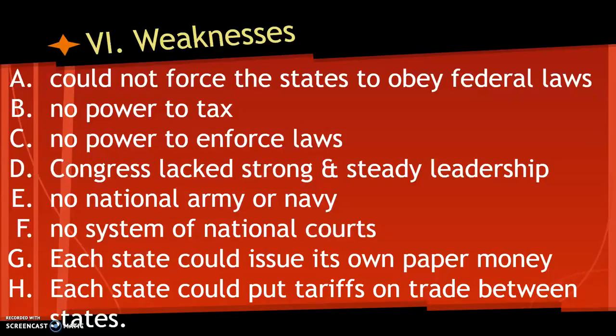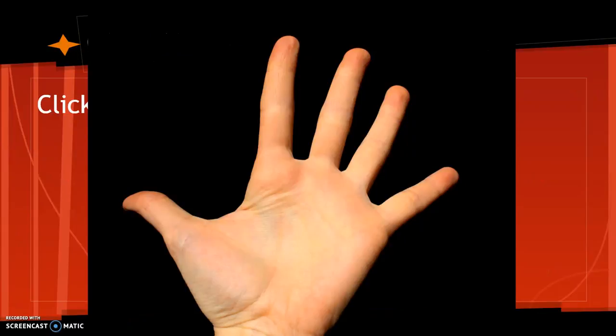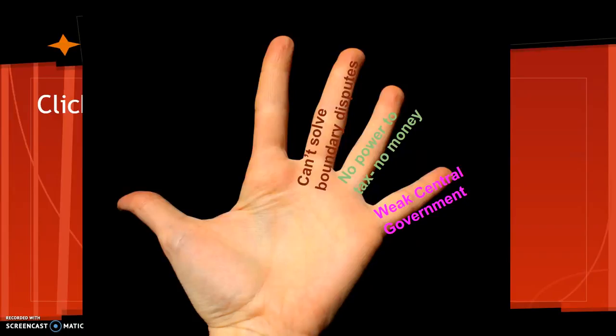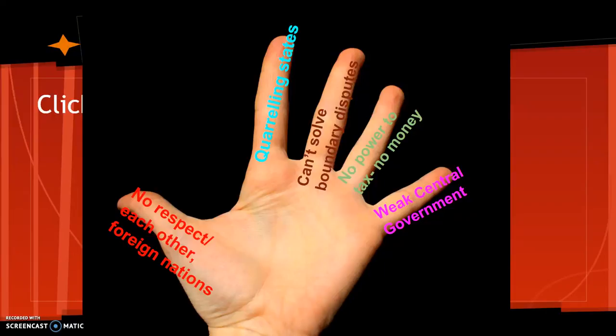I like to use the five-finger rule to remember these weaknesses. Your pinky is your weakest finger — remember there's a weak central government. The next finger: no power to tax, no money. The middle: we can't solve boundary disputes, we have no court system. The ring finger: the states are fighting. And the thumb: we don't have respect from each other or from foreign nations.